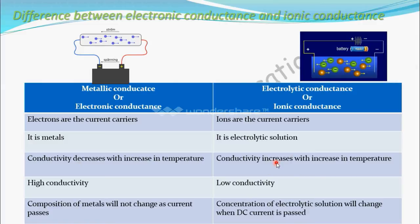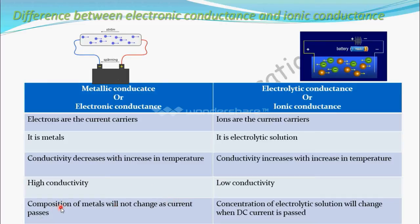For metallic conductance, conductivity is very high compared to electrolytic conductance. For electrolytic conductance, conductivity is low. Also, for metallic conductance, the composition of the metal will not change as current passes.